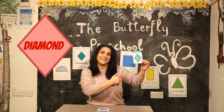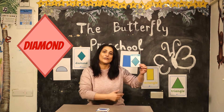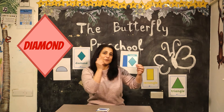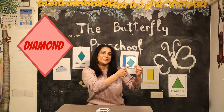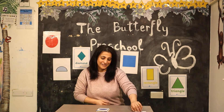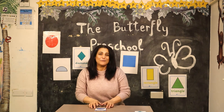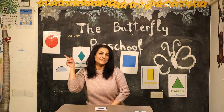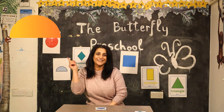One, two, three, four — four sides. Can you repeat after me? Diamond. Well done! Okay, the next shape we have today — can you tell me what shape is this?